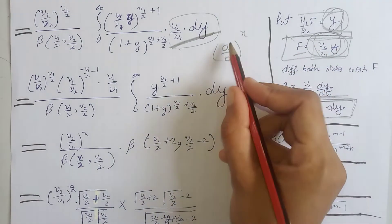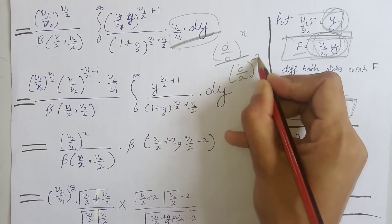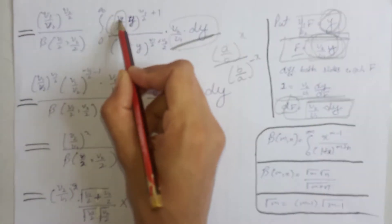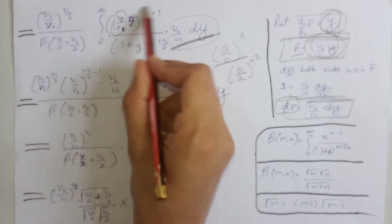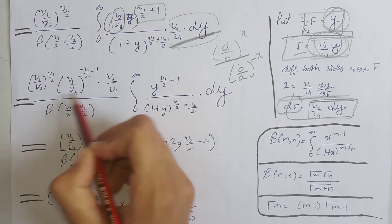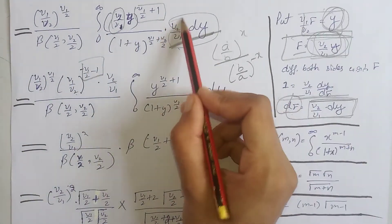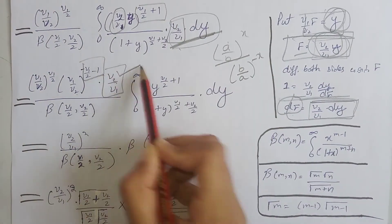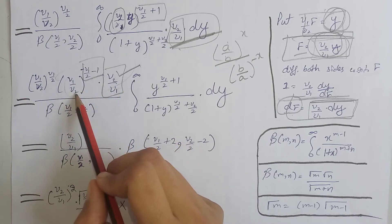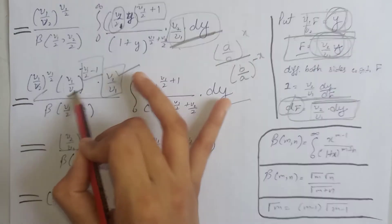We know that (a/b) raised to power x equals (b/a) raised to power minus x. Applying this, ν₂/ν₁ raised to this power equals ν₁/ν₂ raised to minus that power. We take the constant terms outside the integral since they do not contain y.